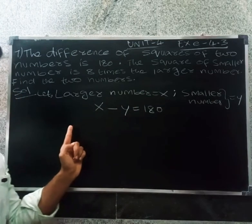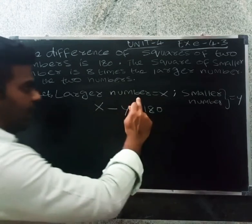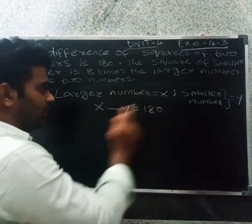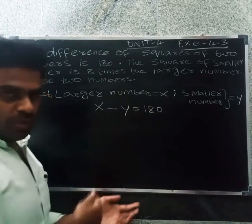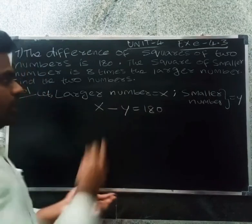Let the larger number be x. The difference of squares of the two numbers is 180, so x squared minus y squared equals 180.